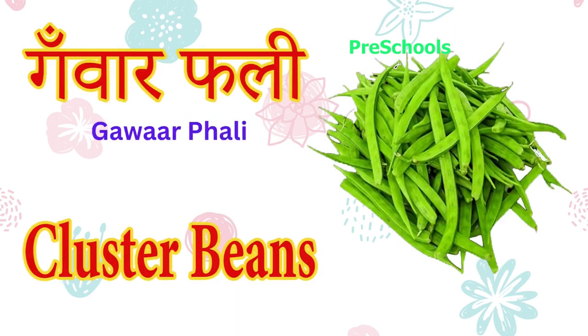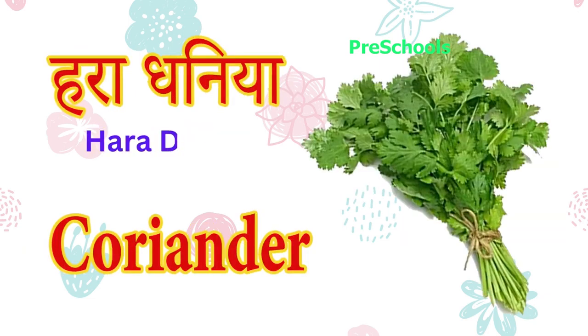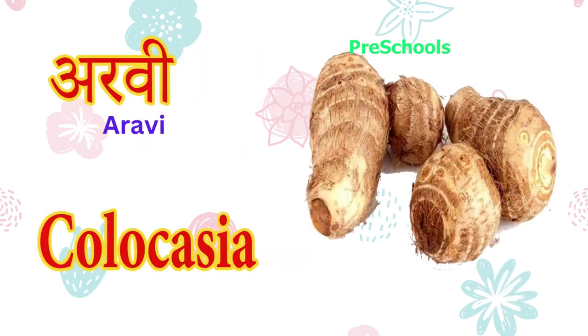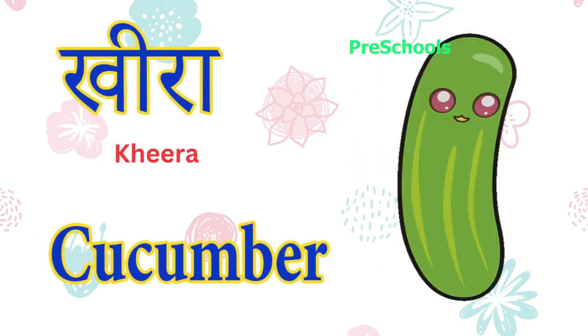Gamvar fali matlab — cluster beans. Haradhaniya matlab — coriander. Arabi matlab kolokasya — colocasia. Makha matlab — corn. Kira matlab — cucumber.